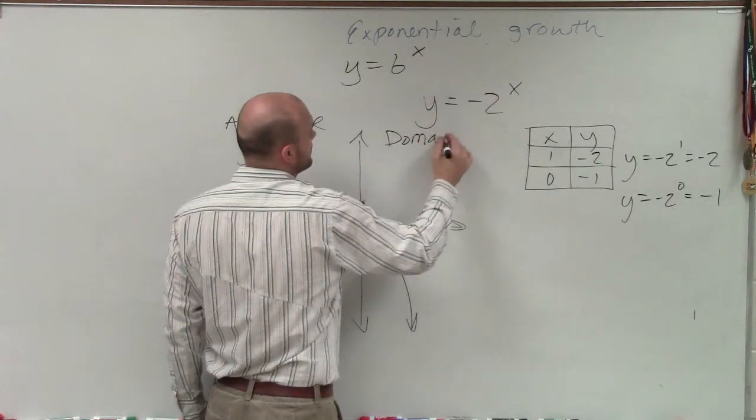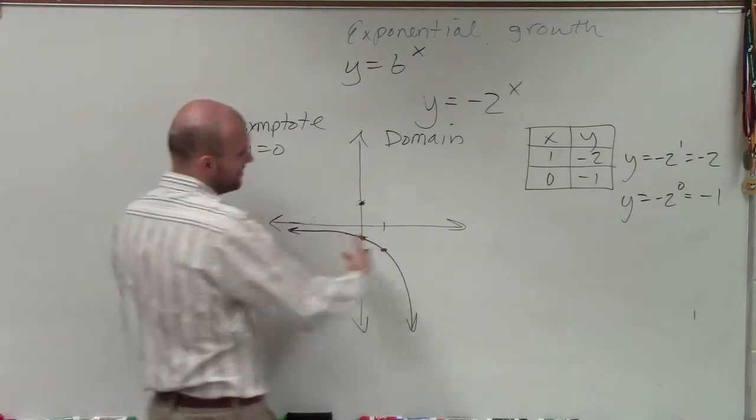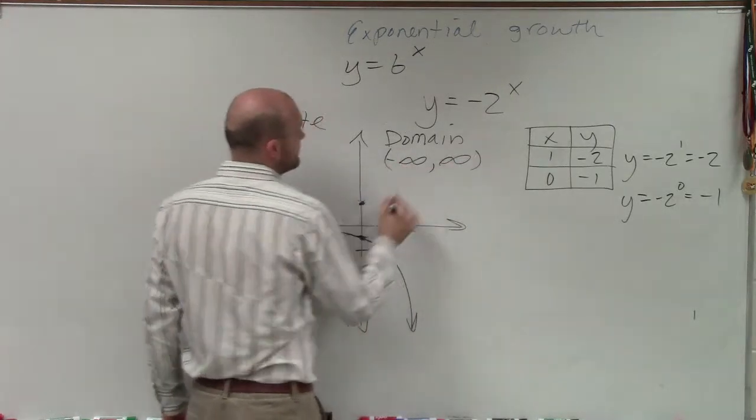My domain, you could see that this graph is going to continue, it's going to be real for all values to the left and all values to the right. So my domain is going to be going from negative infinity to infinity.